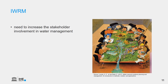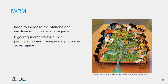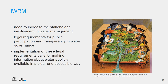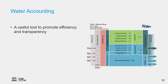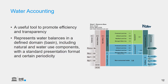Increased stakeholder involvement in water management is vital for implementation of integrated water resources management. This need has been translated into legal requirements for public participation and transparency in water governance. The implementation of those legal requirements calls for making information about water publicly available in a clear and accessible way. Water accounting emerges as a useful tool to promote efficiency and transparency. Water accounting represents a way of compiling water balances in a defined domain, including different water use components, with a standard presentation format in the form of standardized sheets, maps, figures, and tables in a defined time step.